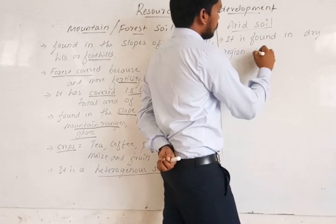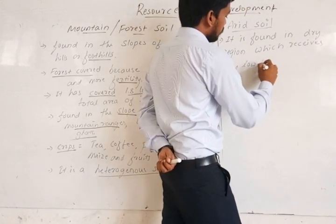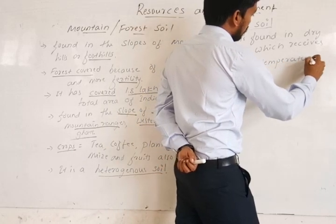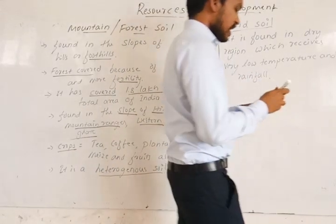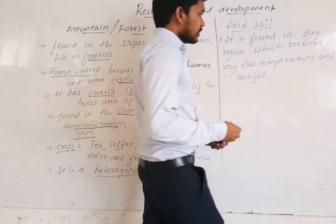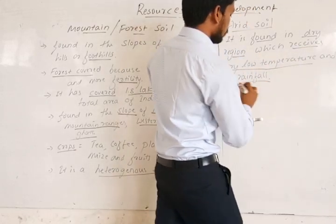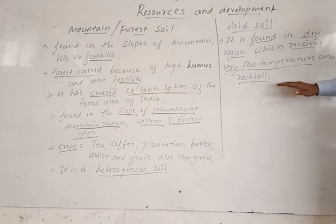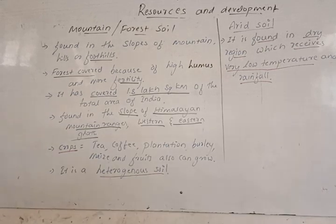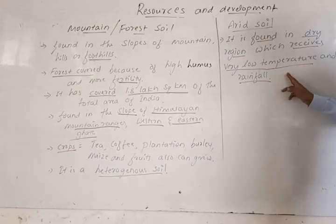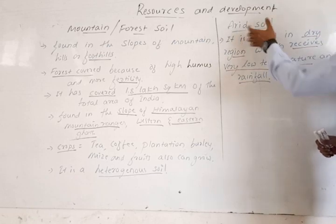Arid soil is found in the dry region which receives very low rainfall. In Rajasthan, it is found in a dry region that receives low temperature and low rainfall. This area is called the arid region — with very low temperature and low rainfall — and this type of soil has formed there.